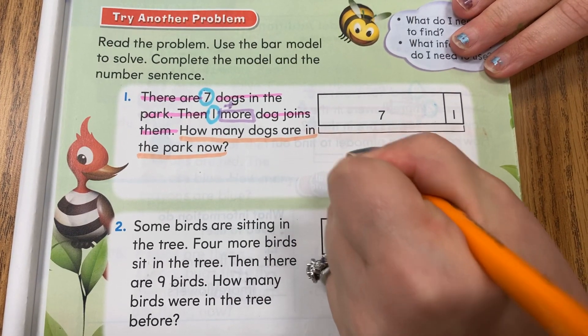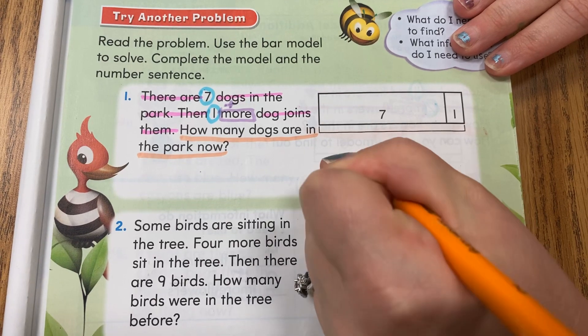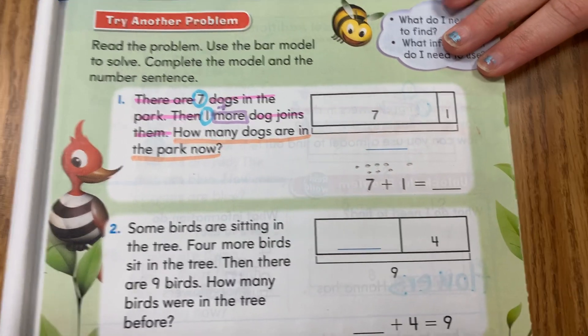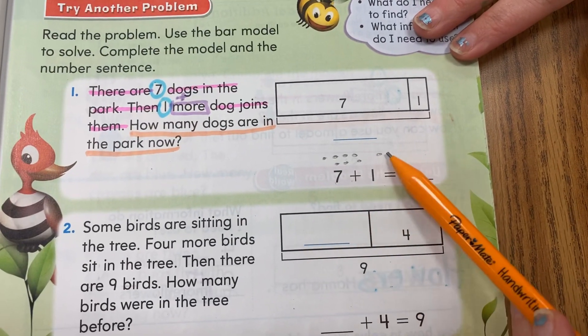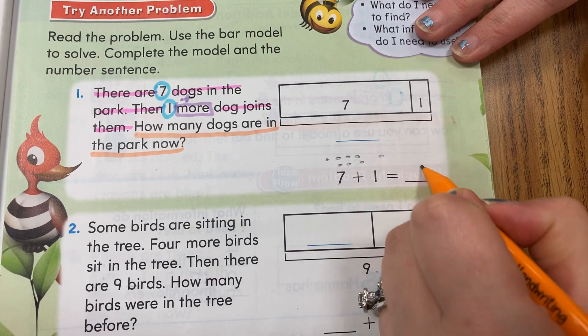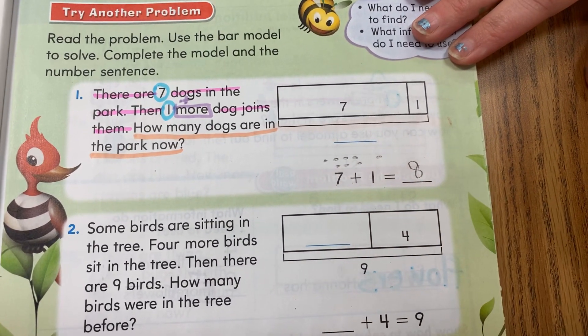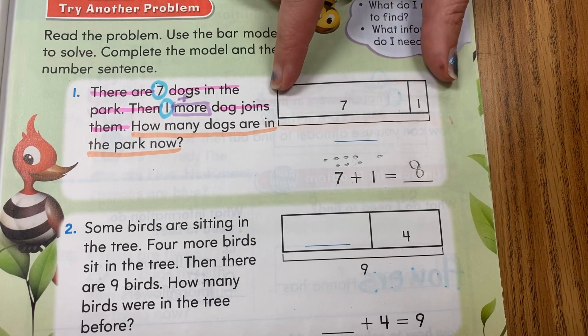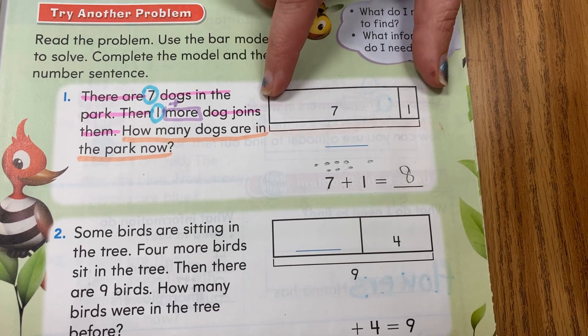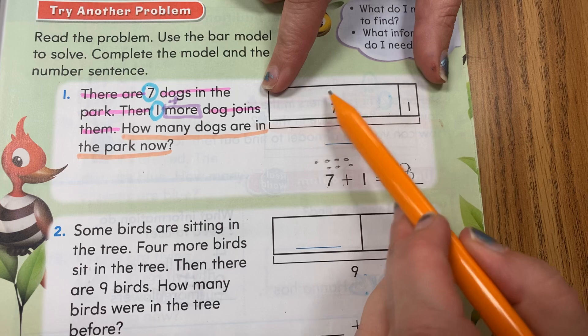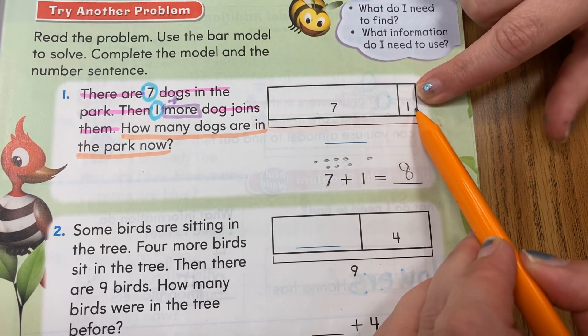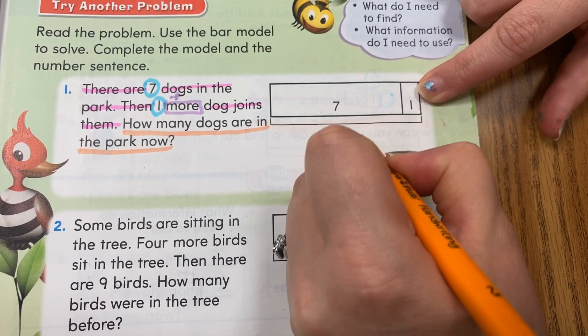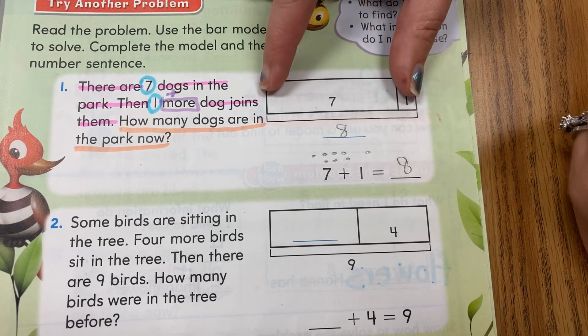Then it comes to my sentence right here. You'll see seven plus one more is the same as... and if you need to draw your dots, feel free. That's your model. So seven plus one would be eight, perfect. But we need to place it in the bar model.